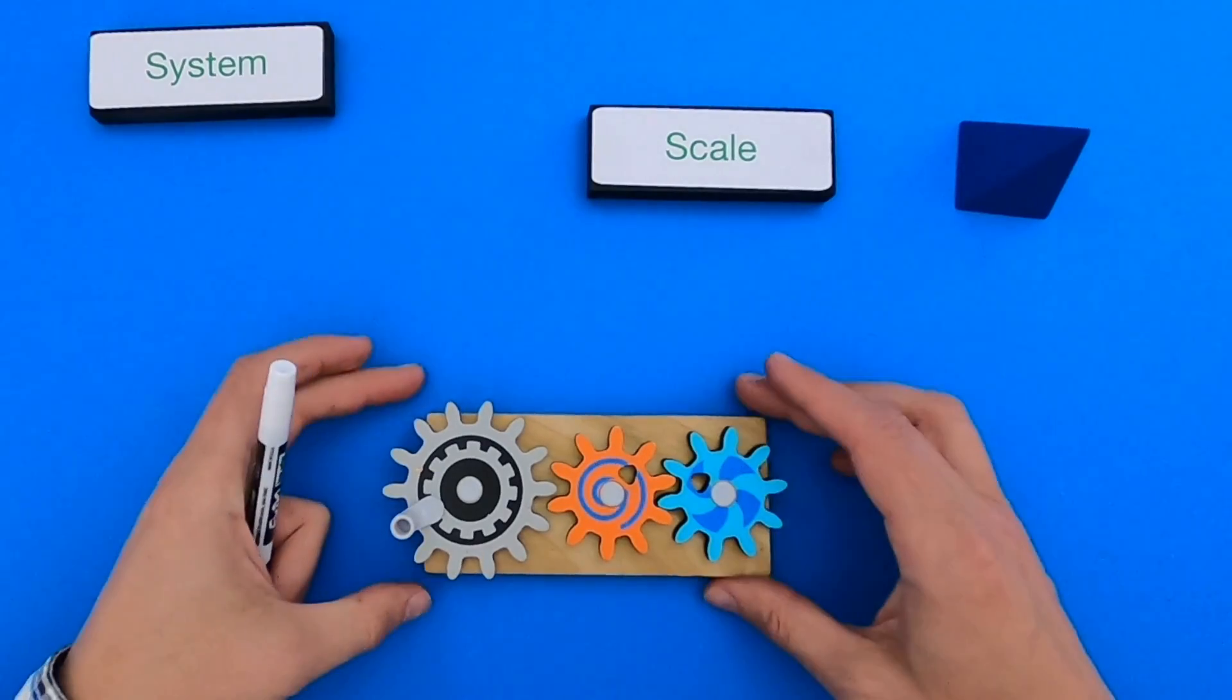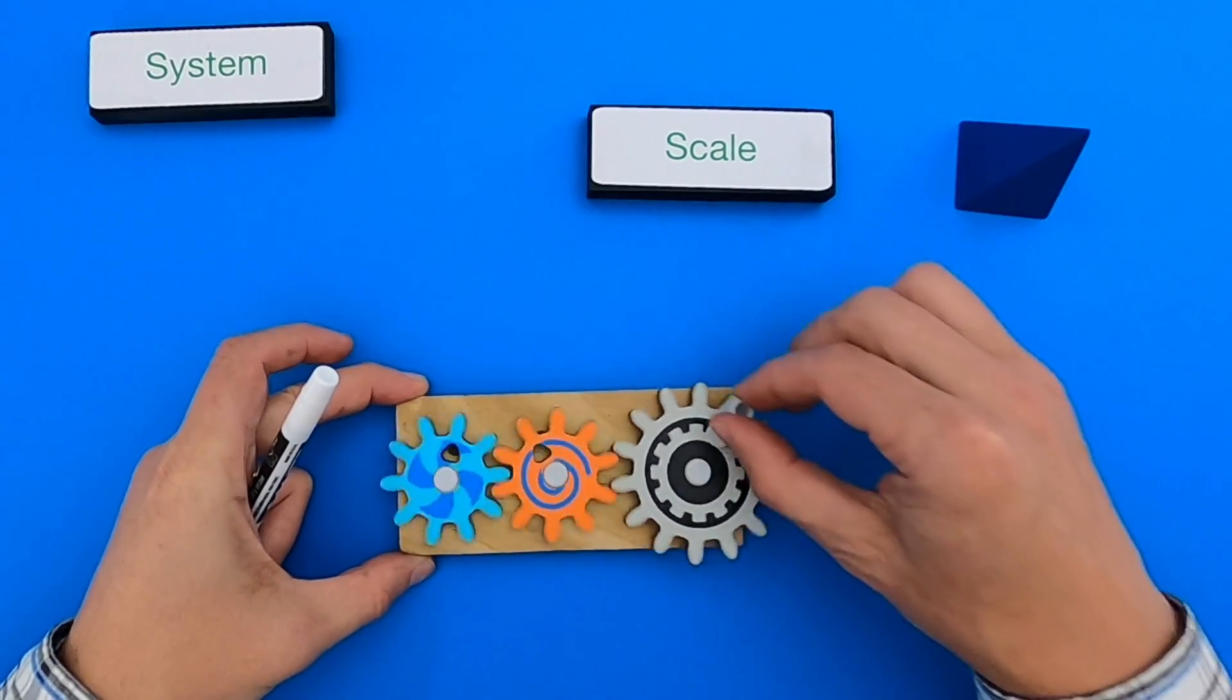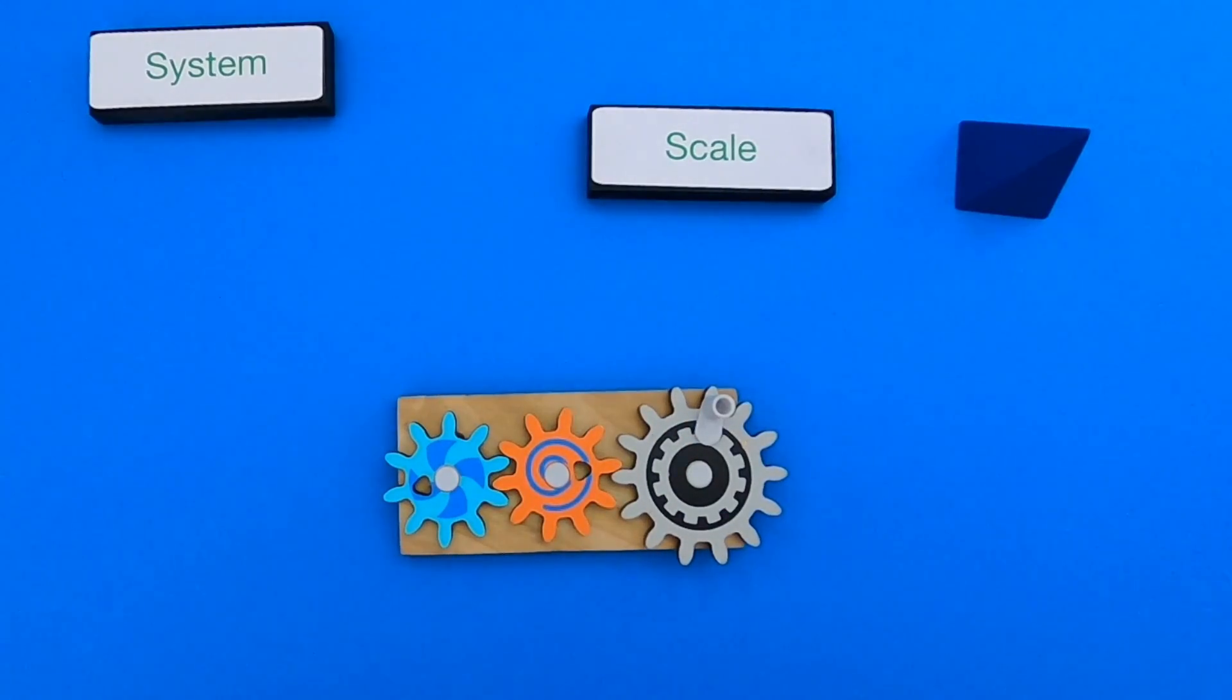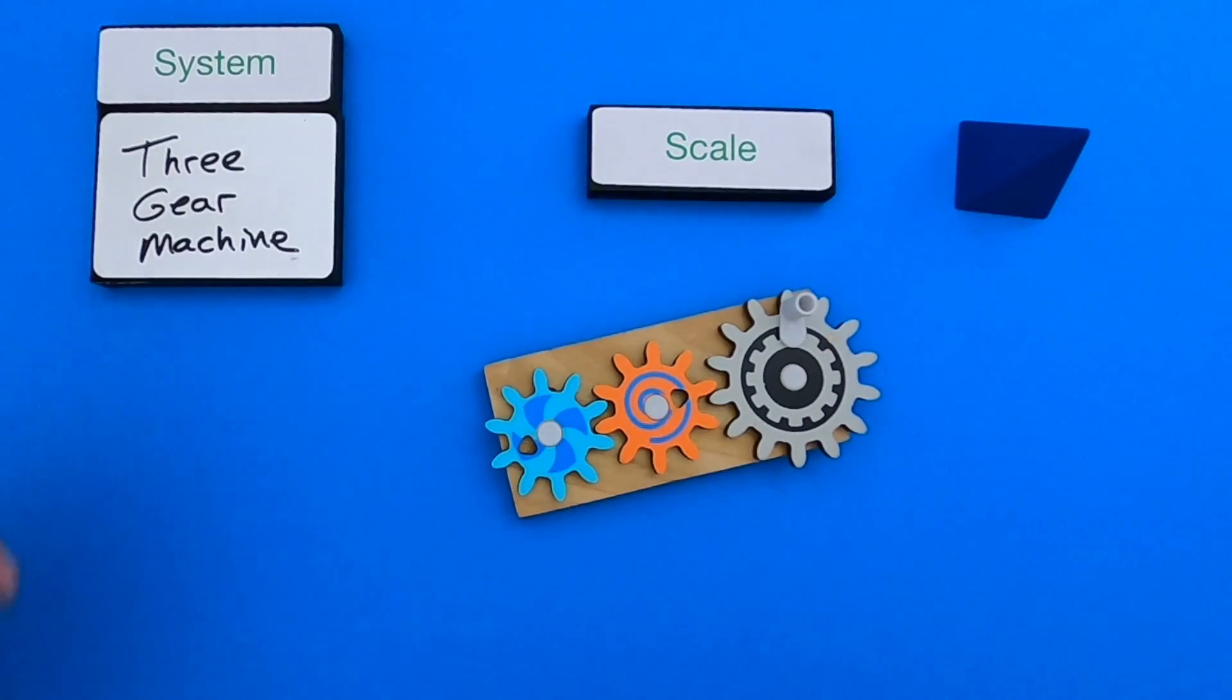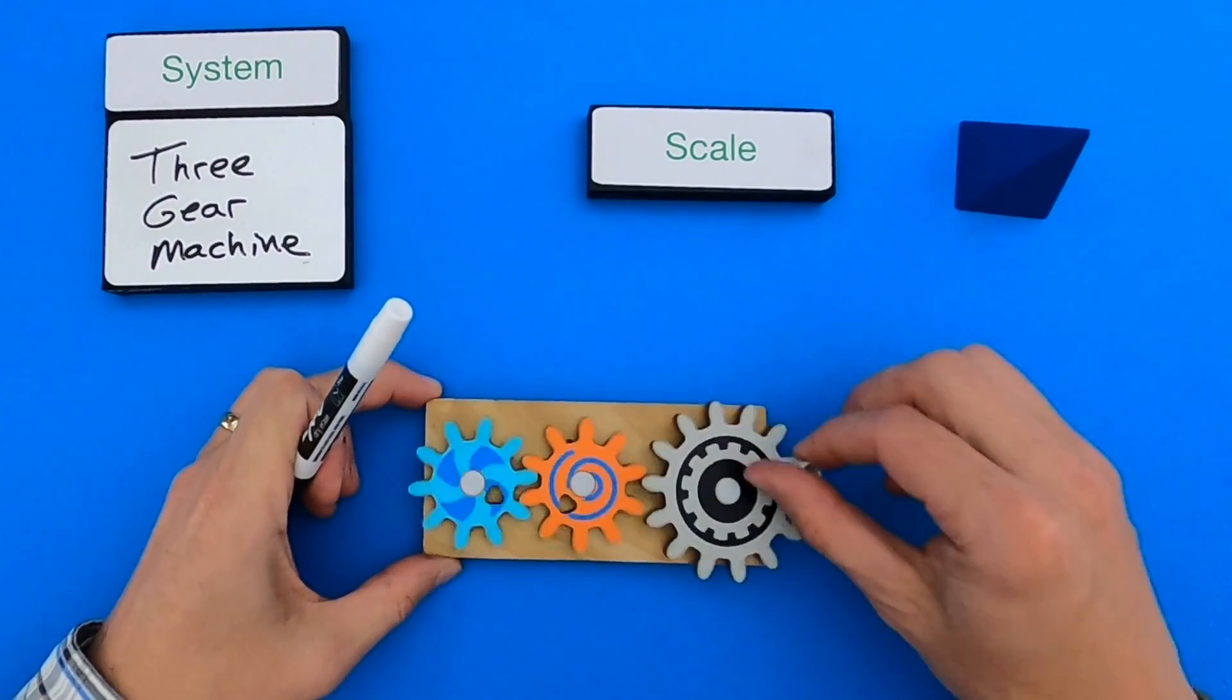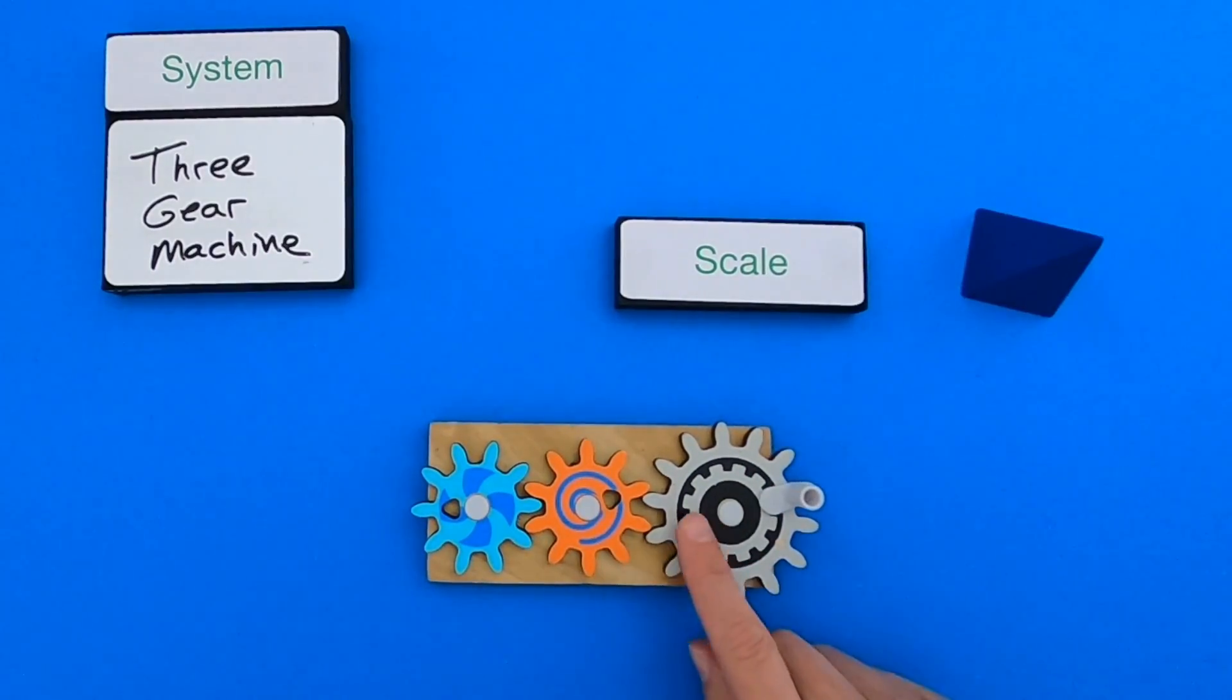All right, I showed you my thinking with those three objects. And now I've got a new system. Let me show you how this one works. We've got some gears. And so what I'm going to do is first define the system. So in this investigation, our system is going to be this three gear machine.